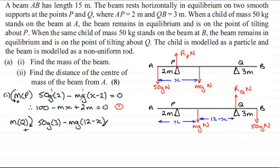So that's the resultant moment, but the beam's in equilibrium. So therefore that resultant moment must equal zero. And now I can see that I can divide through by g in every term. So we've got that. And now, just cleaning this up, 50 times 3 is 150. And expanding the bracket here gives us minus 12m plus mx. And that equals zero. So that's my second equation.